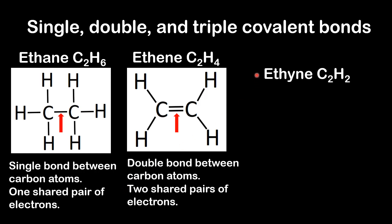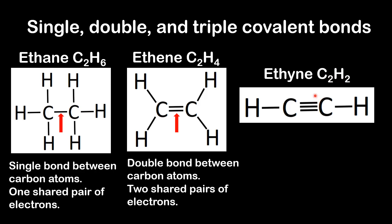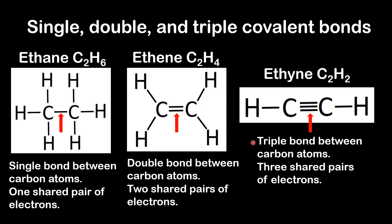And finally we have ethane. The molecular formula is C₂H₂ and this is the structural formula. The three black lines between the two carbons represent a triple bond. A triple bond is composed of three shared pairs of electrons.